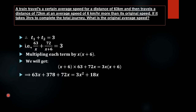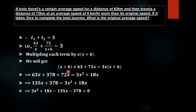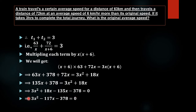Simplifying, we get 63x plus 378 plus 72x equal to 3x squared plus 18x. Taking 3x squared plus 18x to the left side, we get 3x squared plus 18x minus 135x minus 378 equals 0. Again simplifying, we obtain the equation 3x squared minus 117x minus 378 equals 0.